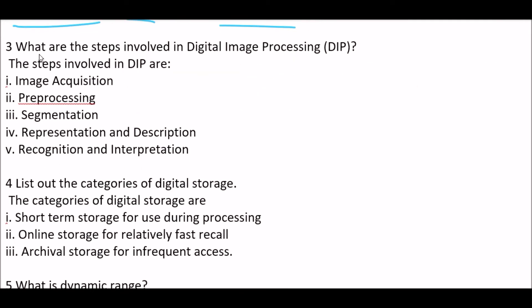Next question. What are the steps involved in digital image processing? The steps involved in DIP are, first one, image acquisition, second one, pre-processing, third one, segmentation, next one, representation and description and next one, recognition and interpretation.